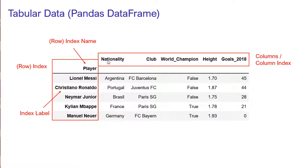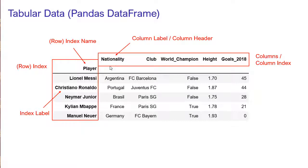Then we have the columns, or the column index, with all of the column labels — the headers for each column: nationality, club, world champion, height, and goals.